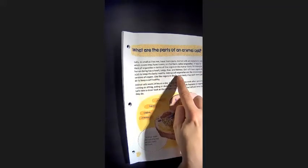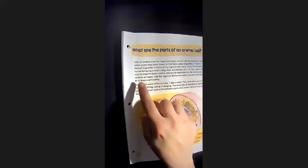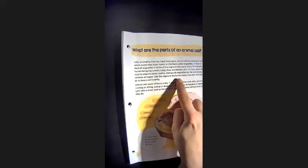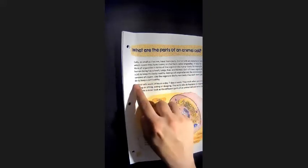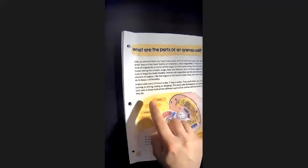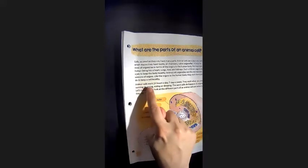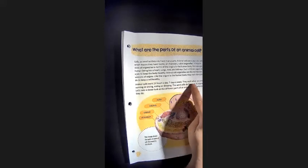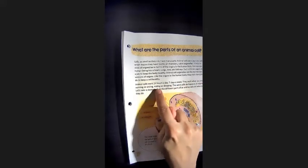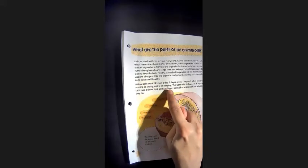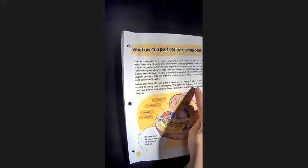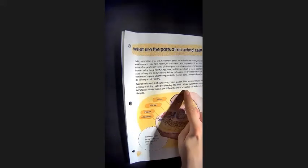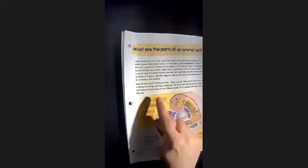Animal cell organelles are like microscopic versions of organs. Like the organs in the human body, they each have jobs to do to keep a cell healthy. Animal cells work 24 hours a day, seven days a week. They work when you are running or sitting, eating or sleeping. The work cells do happens in organelles.